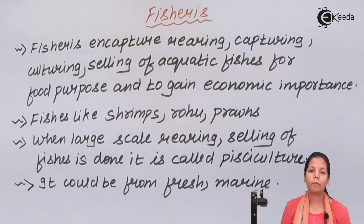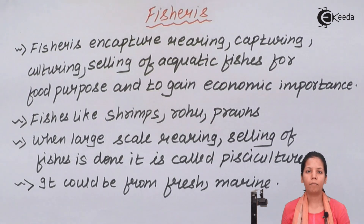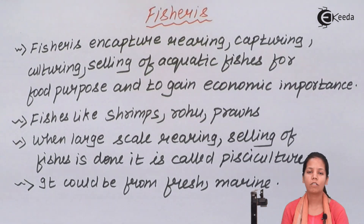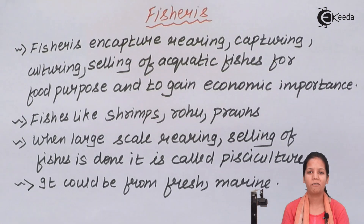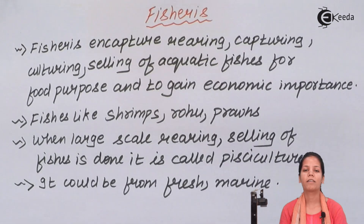For example, prawns are mostly freshwater and are found at a particular region in India — the Bay of Bengal is one of the prominent places. So students, in this part of the chapter we came across fisheries and what the term fisheries stands for. I hope you all are very clear with this concept. Thank you!